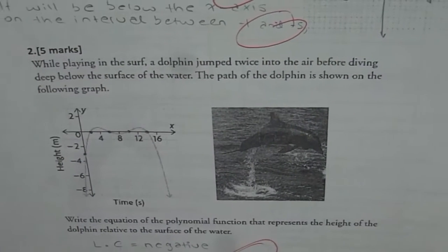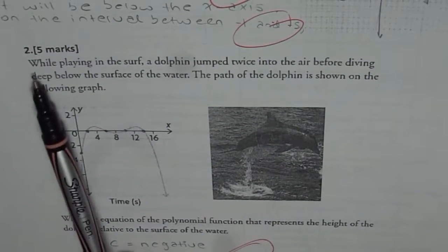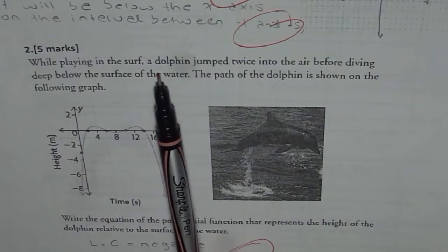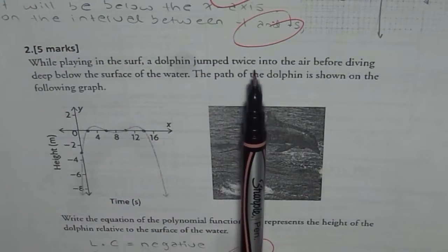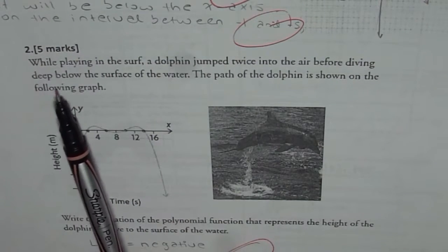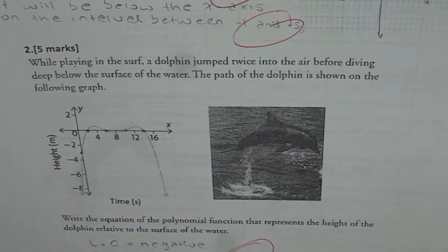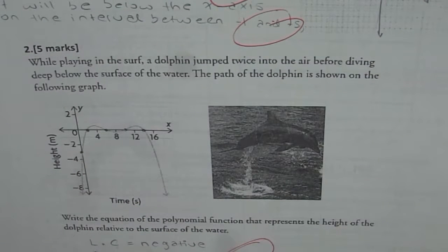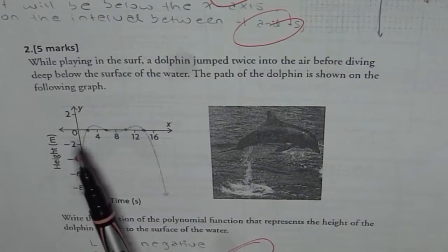The question is, while playing in the surf, a dolphin jumped twice into the air before diving deep below the surface of the water. The path of the dolphin is shown on the following graph. So that's the graph.